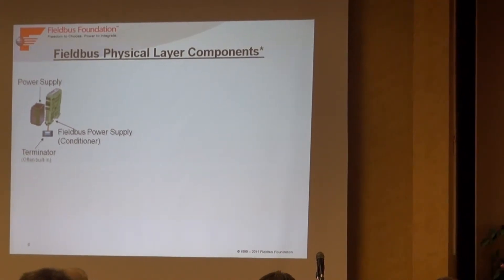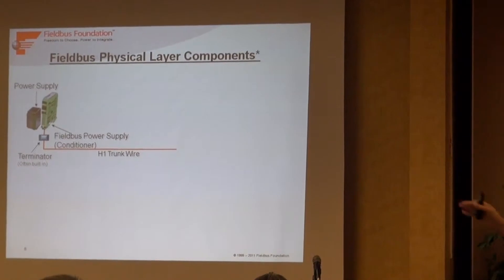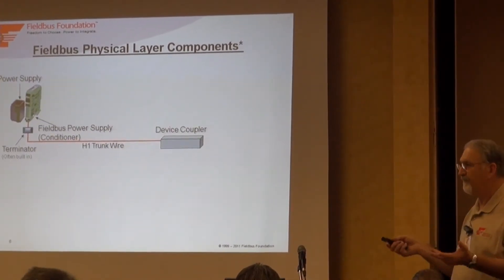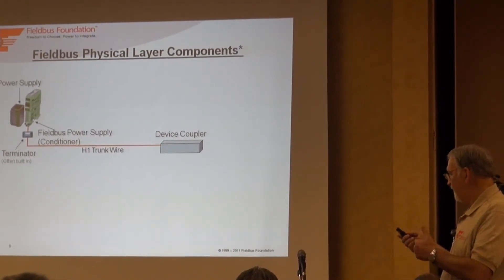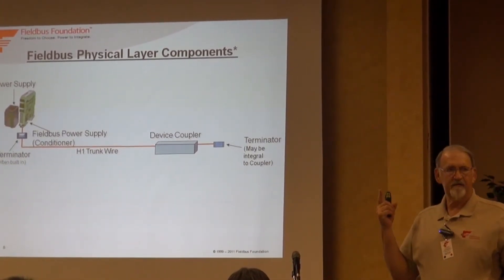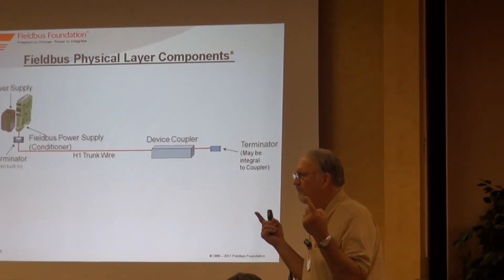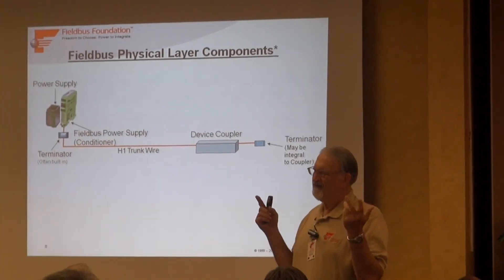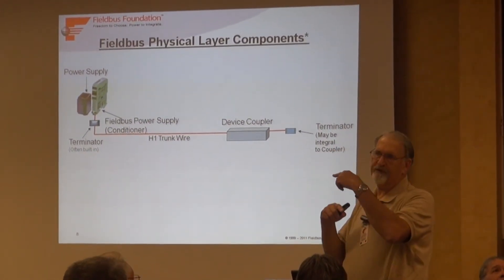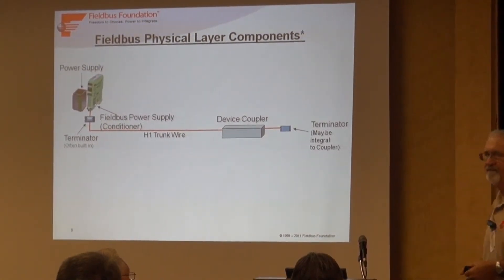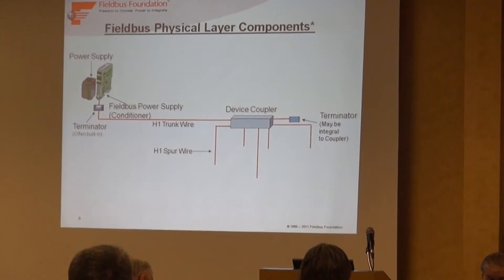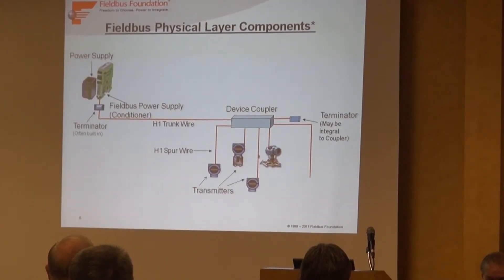You've got to have a terminator. You start out with a trunk, run it out to wherever you're going, to a device coupler. There could be several variations. In general, you're going to run out to a device coupler, and on there you'll have a terminator. How many terminators are there? Two. Can it be more? That's a trick question - yes it can be, but do you want it to be? No. It's not going to blow up if you have three, but it's going to affect your signal strength. Two is what you really want. Then you run spur wiring out to your devices - transmitters, valves, whatever.